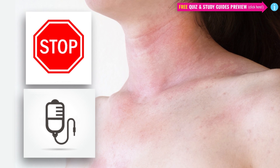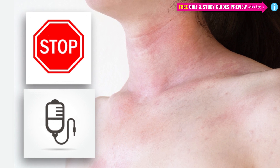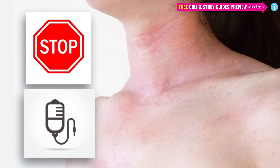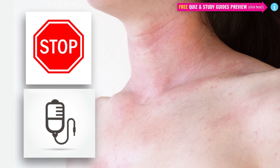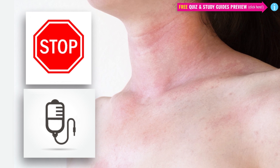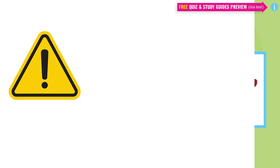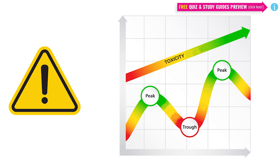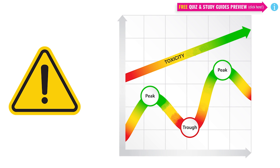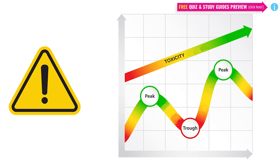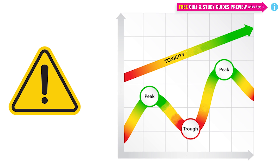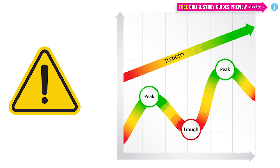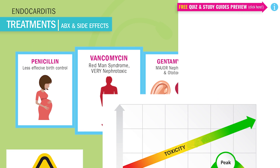Always stop any infusion that's causing a reaction, then assess the patient's airway — huge test tip. Vancomycin has significant toxic side effects: nephrotoxicity (kidney toxicity) and hypotension. So we're going to be checking peaks and troughs during this drug to see how much of it we have in the body. We don't want the patient to have too much and cause too much toxicity inside the kidney.